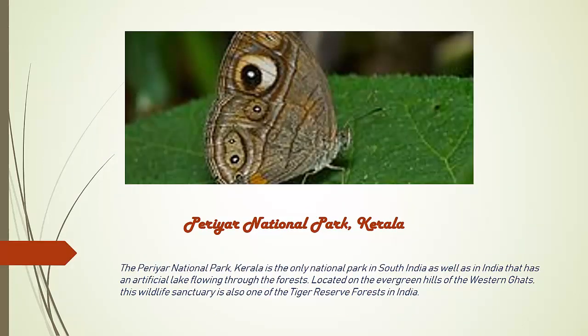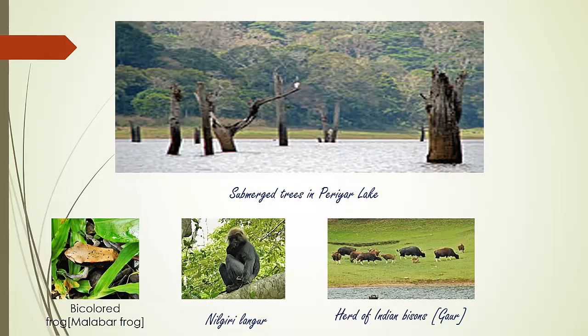Periyar National Park from Kerala. This national park has an artificial lake flowing through the forest and is located on the evergreen hills of the Western Ghats. It is also one of the tiger reserves. Examples of wildlife found at Periyar National Park include Nilgiri Langur, Bison, Malabar Frog, and herds of Indian Bison.